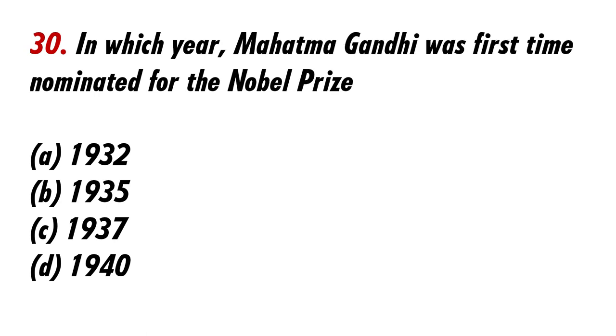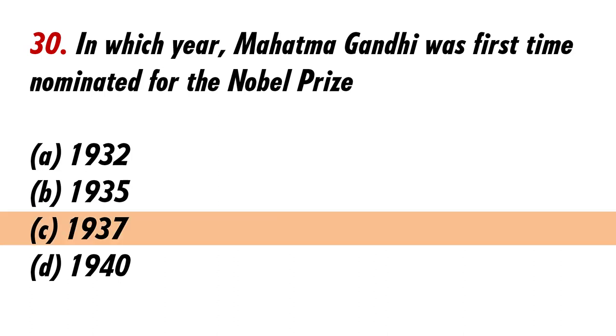In which year was Mahatma Gandhi first nominated for the Nobel Prize? Answer C: 1937.